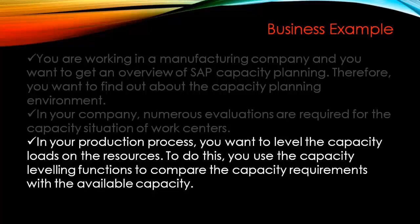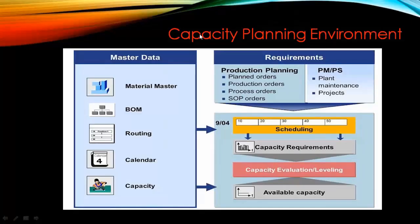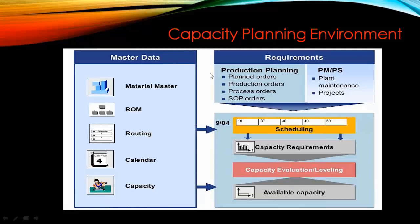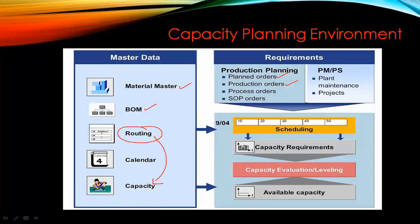We'll start with capacity evaluation. In earlier lectures we have seen how requirements are generated — we create planned orders, production orders, or process orders from master data. Master data can be a material master, a BOM, or a routing. The capacity data comes from the routing, which has a work center, and the work center has further capacity defined in CR02.